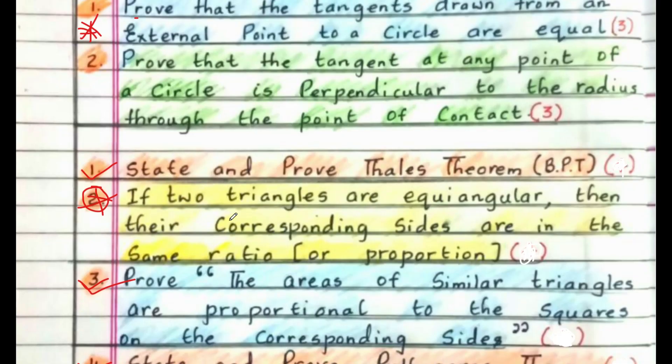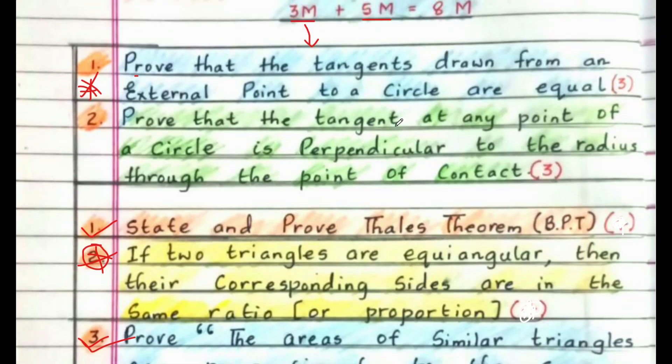Students, another theorem is: the tangent at any point to a circle is perpendicular to the radius through the point of contact. You can go through that theorem once. It will be asked for 1 mark — the statement or the angle between the radius and the tangent will always be 90 degrees.